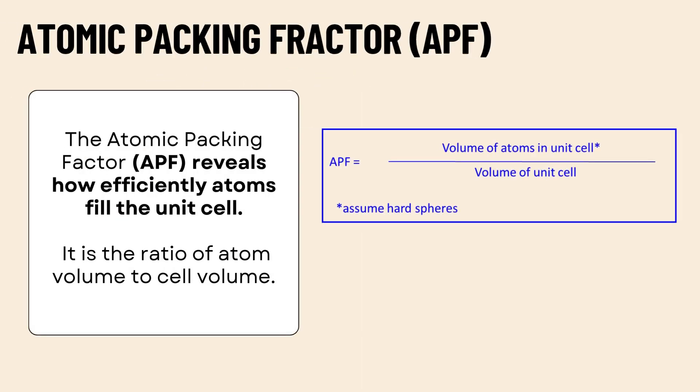The atomic packing factor (APF) reveals how efficiently atoms fill the unit cell. It is the ratio of atom volume to cell volume. It measures how much of the space inside the unit cell is actually filled with atoms.